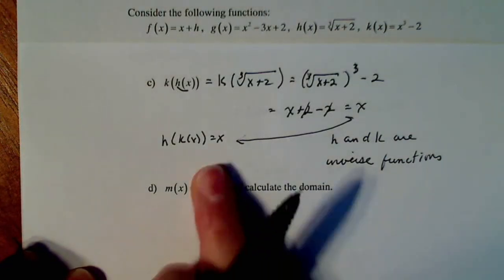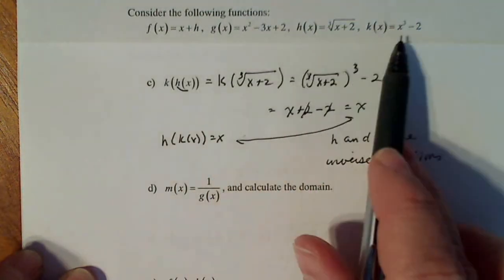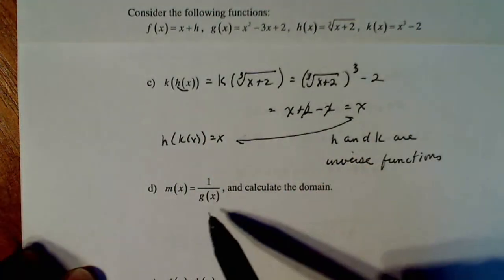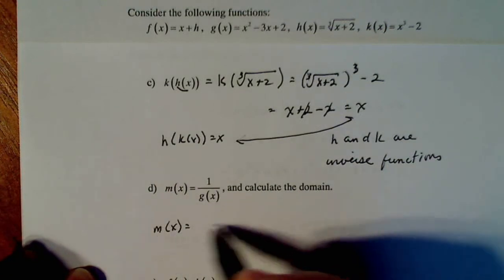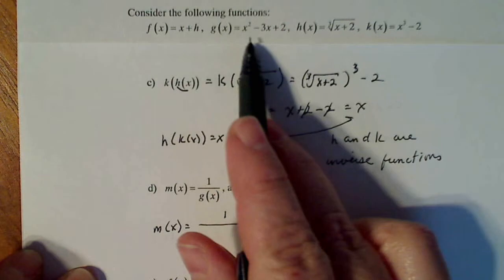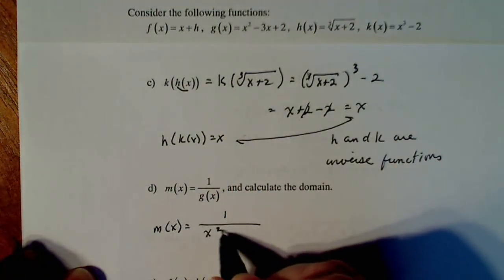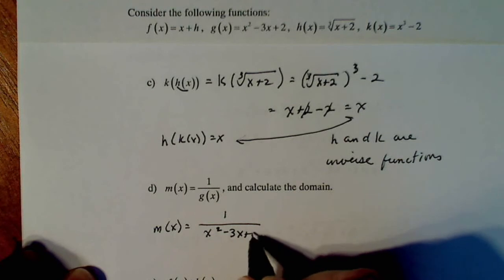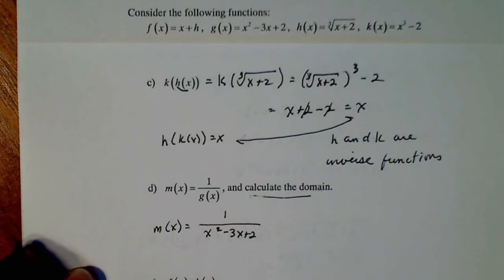M is a new function I'm defining as 1 over G of X. Notice there's no M up here; it's just a new function I'm creating by taking 1 over G. M of X is 1 over G, making sure it's all in the denominator. We're going to calculate the domain of this function.